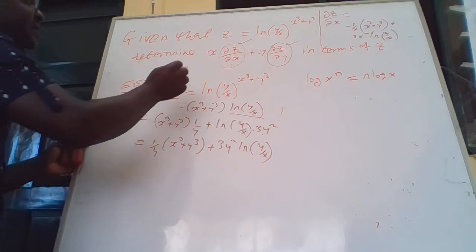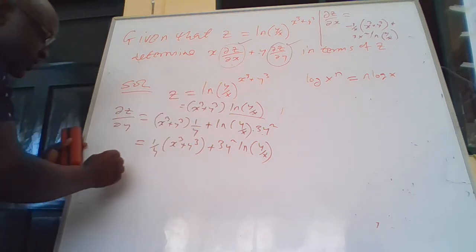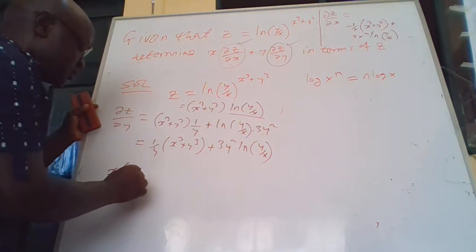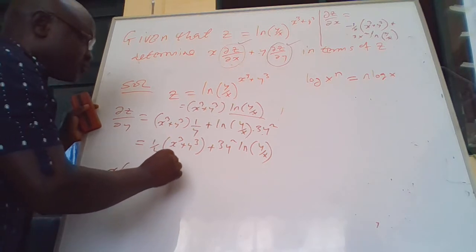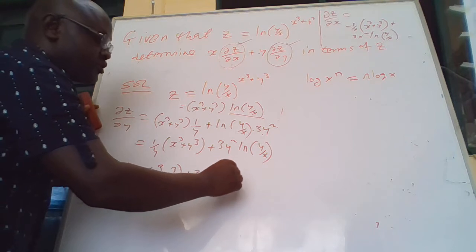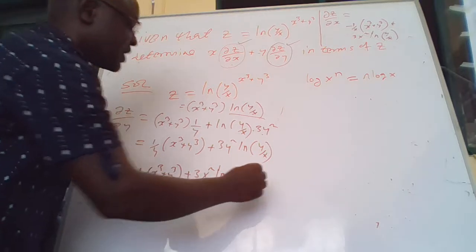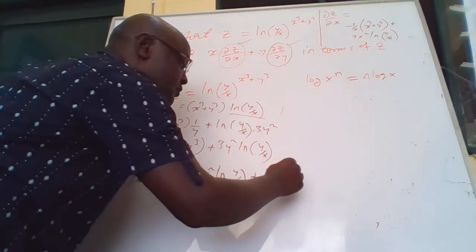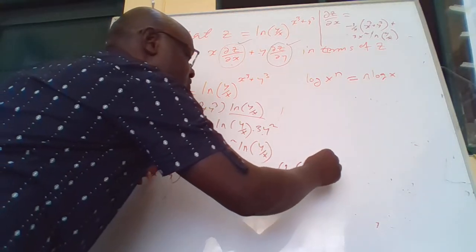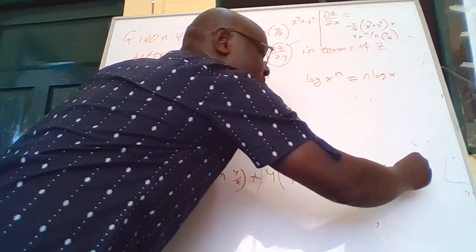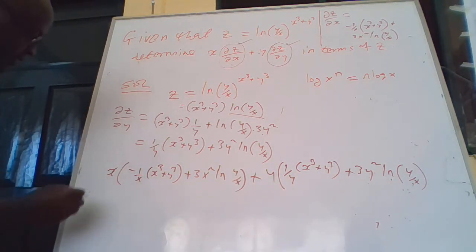Now we compute x·∂z/∂x + y·∂z/∂y. Multiplying ∂z/∂x by x gives x·[−(1/x)(x³ + y³) + 3x²·ln(y/x)]. Adding y·∂z/∂y gives y·[(1/y)(x³ + y³) + 3y²·ln(y/x)].